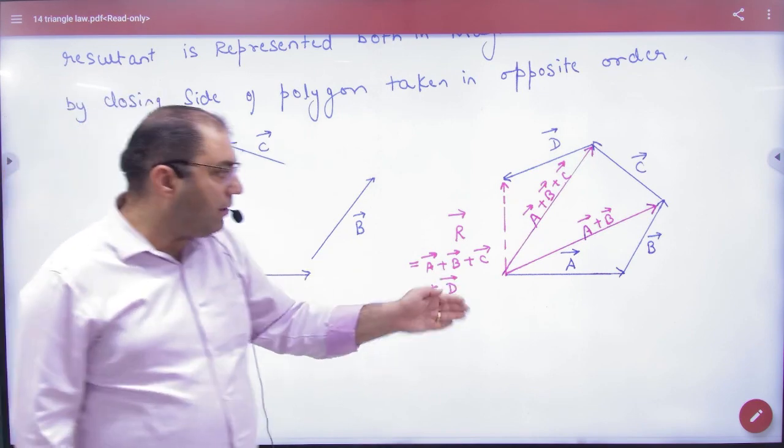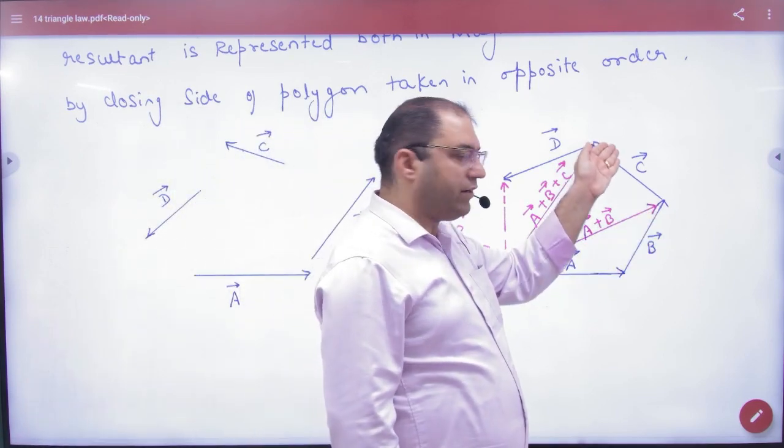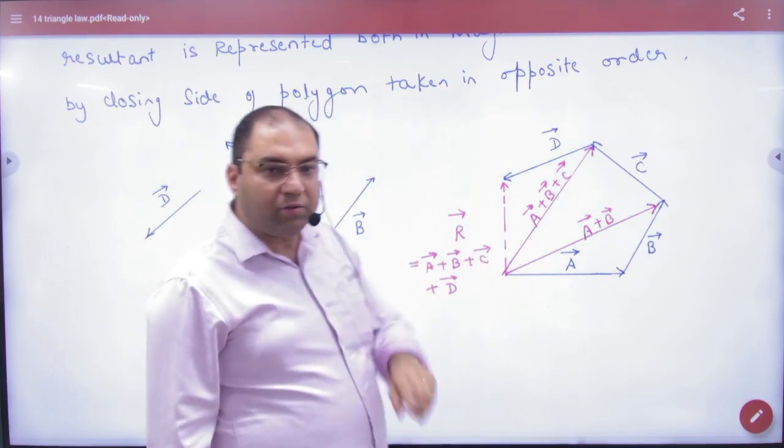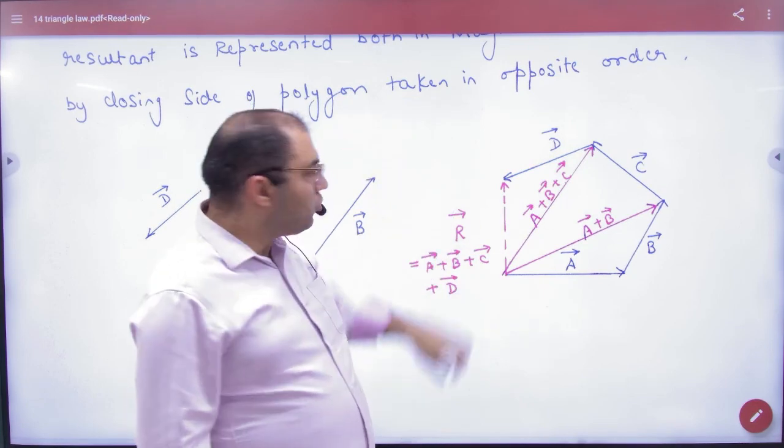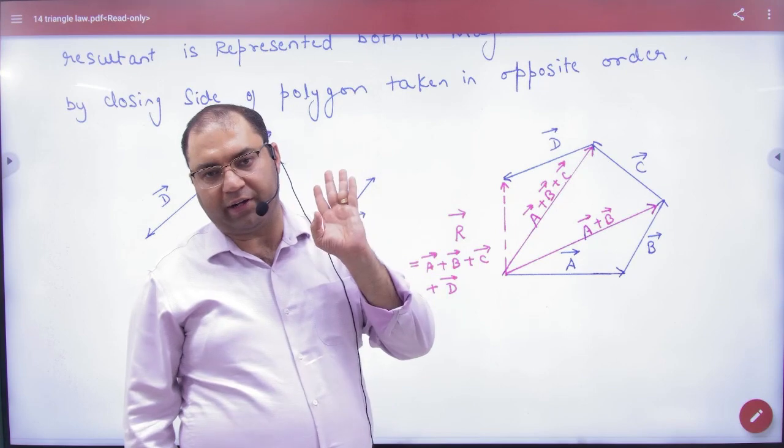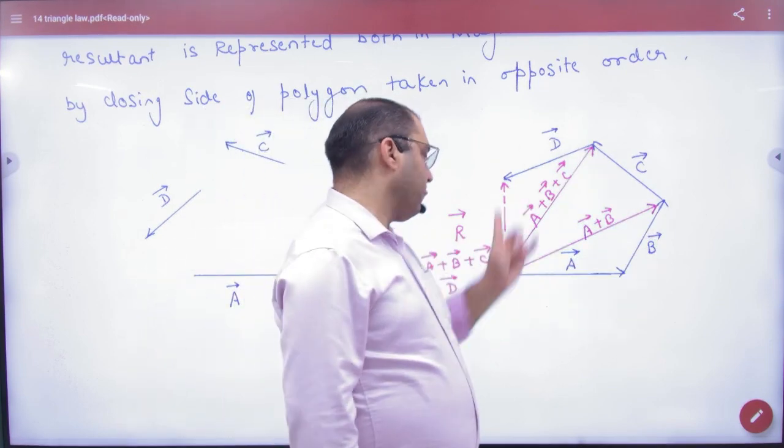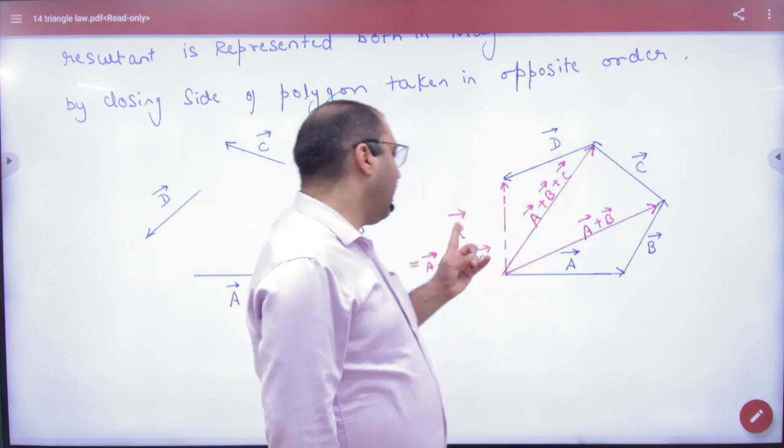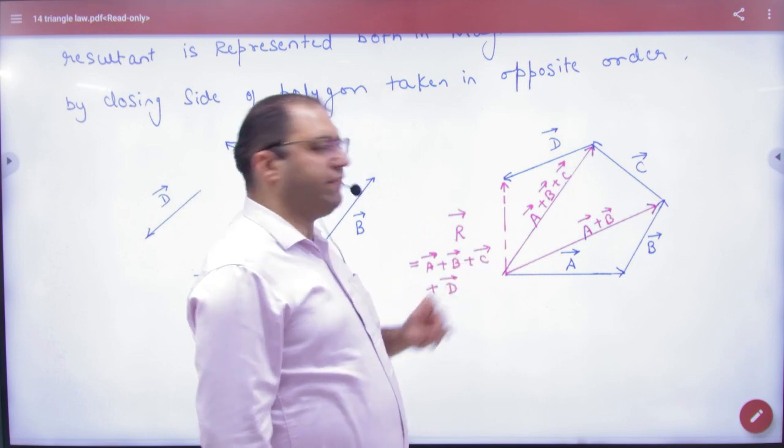Like A vector after B vector, after C vector, after D vector. So this is the last open side polygon. The closing side will be the opposite order. This will be the resultant R vector. So this is the same order, this is the closing order. R vector, A vector, B vector, C vector, D vector. This is not a new thing.